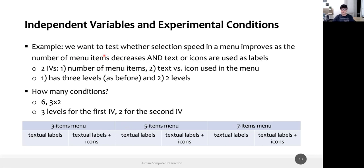We want to test whether selection speed in a menu improves as the number of menu items decreases and text or icon labels are used. We want to say that the three-item menu with text label is the quickest and the slowest is the five-item menu with text plus icon labels. We defined all these variables and measures, and our hypothesis is: selection speed in a three-item menu with text label is quicker than selection speed in a five-item menu with text plus icon labels.